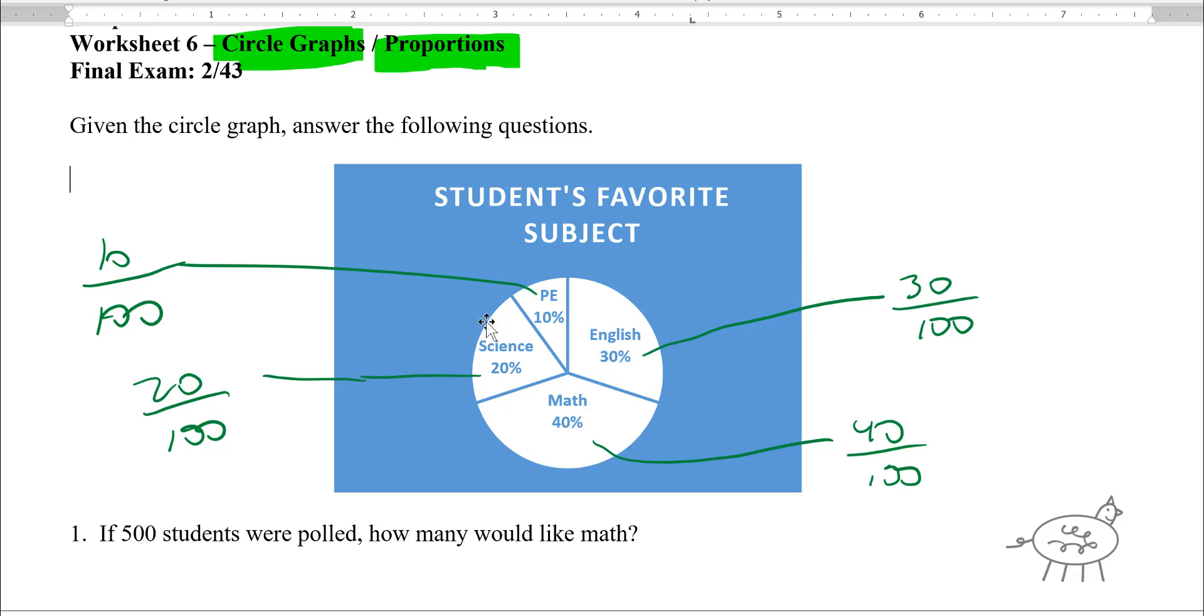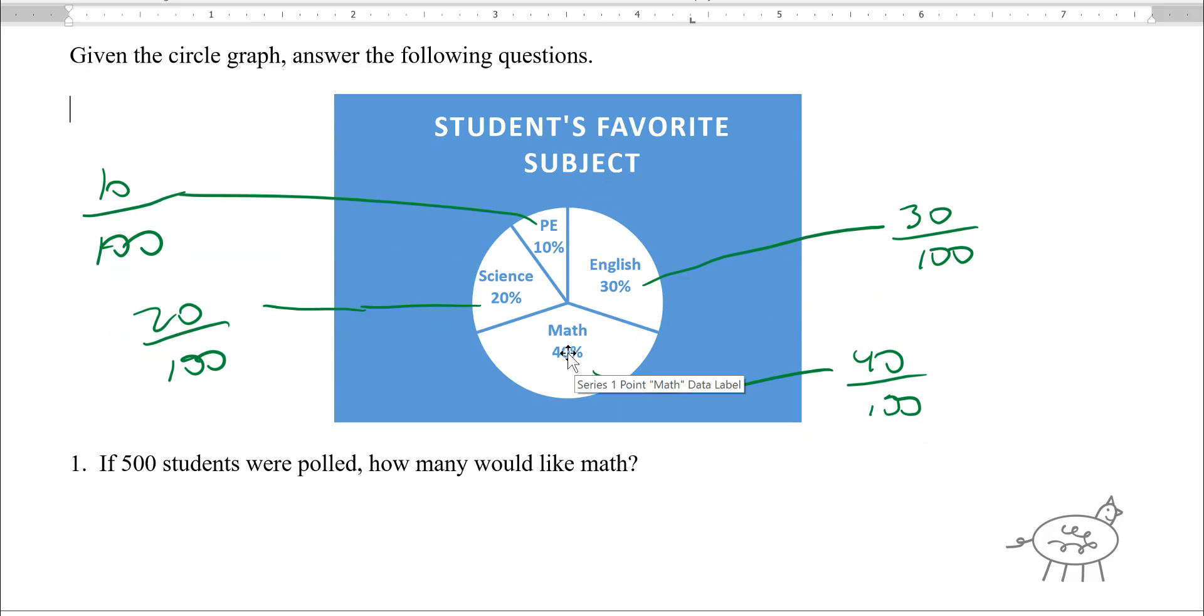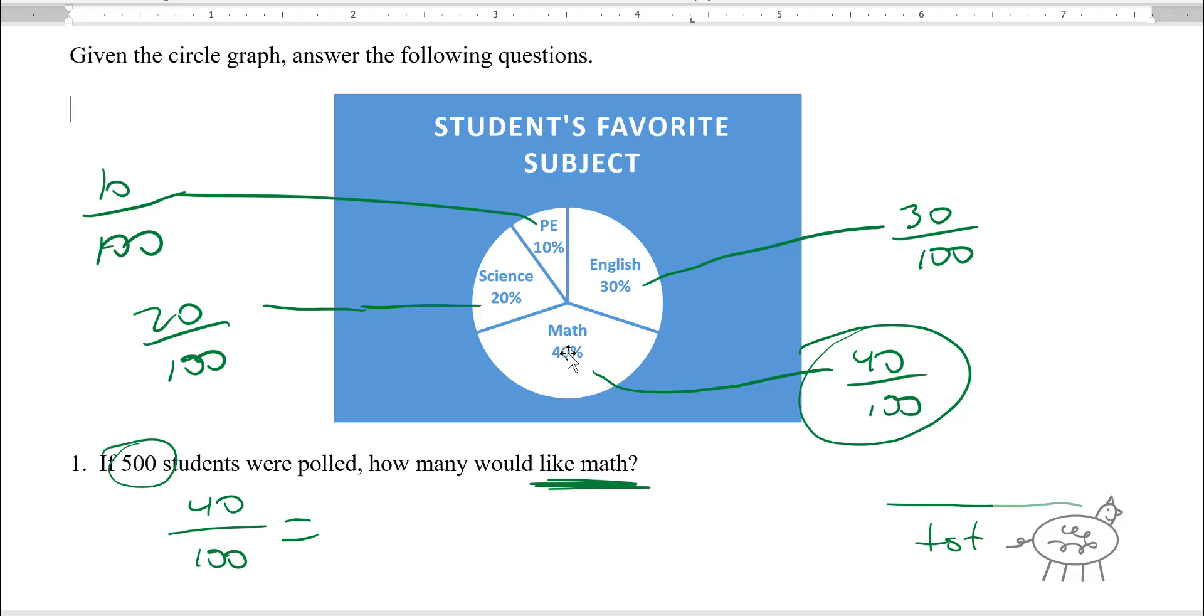So what's going on here is if you look at our first problem, if 500 students are polled, how many would like math? Since it's math, you know you're going to use the math one, which is 40 over 100. Now the question is, where do you put the 500? The total always goes on the bottom, and the smaller number goes on top. The total, there are 500 students total that were polled, so 500 goes on the bottom.